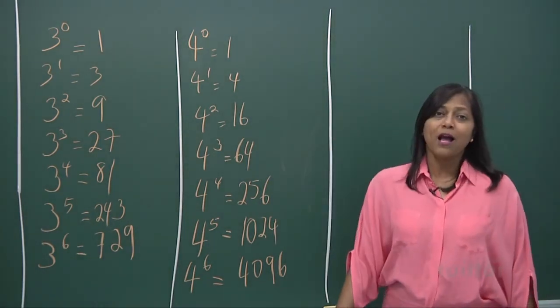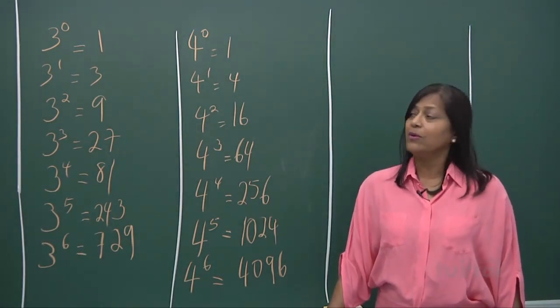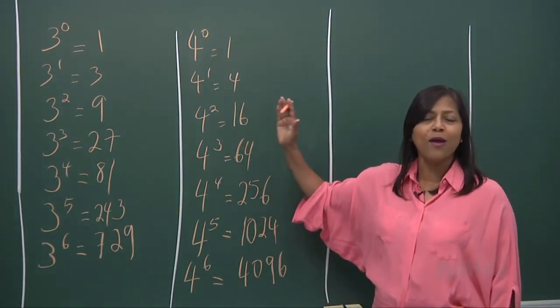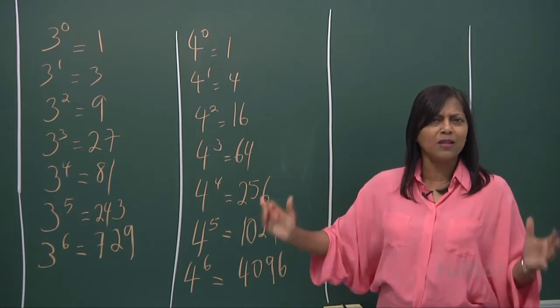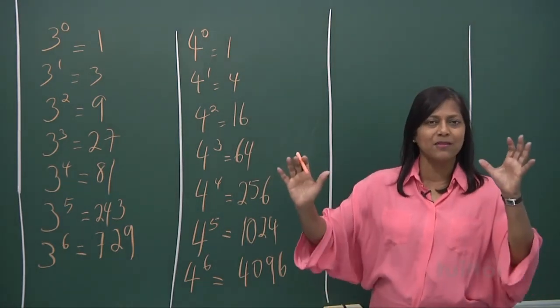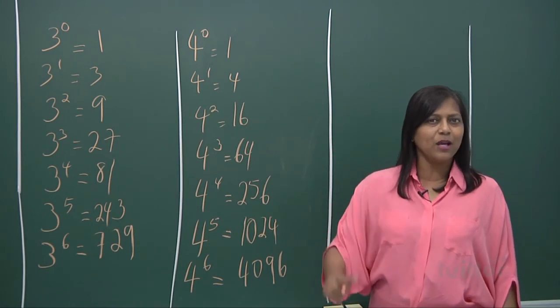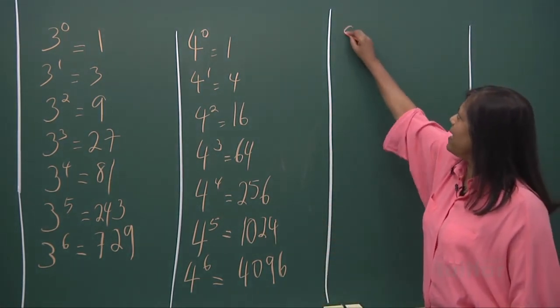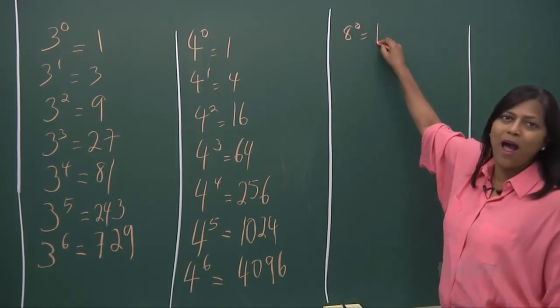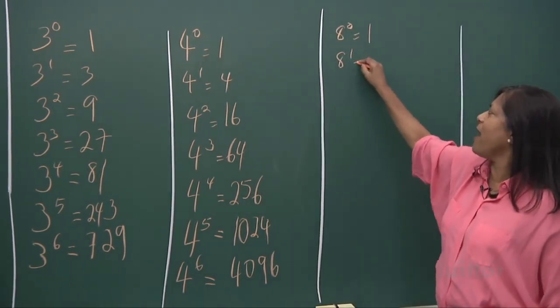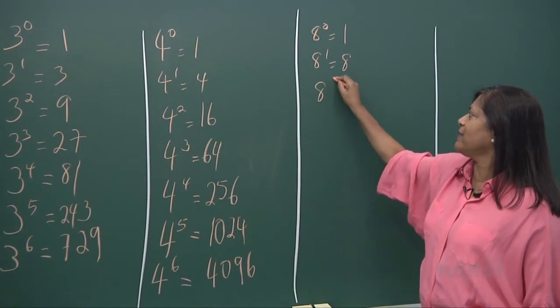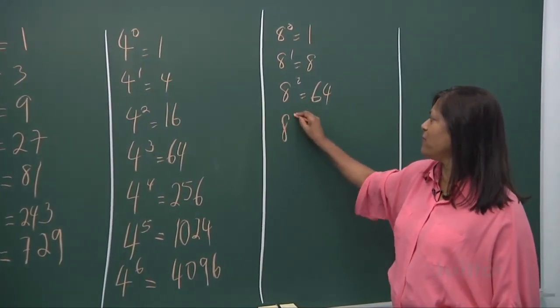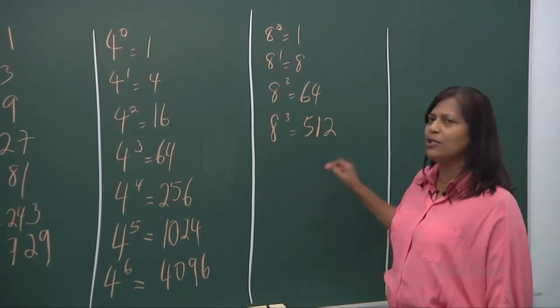From 4, I shall go on to 8, right? Because 2, 4, 8, 16, I will call them as cousins, cousin brothers. They have got something similar and we've got to find out more about it. 8 to the power of 0 is 1. 8 to the power of 1 is 8. 8 to the power of 2 is 64. 8 to the power of 3 is 512.